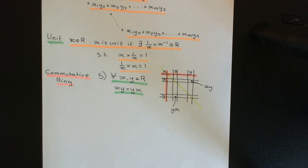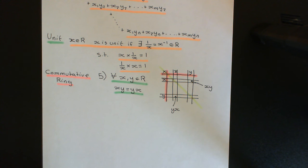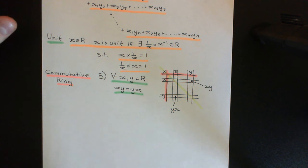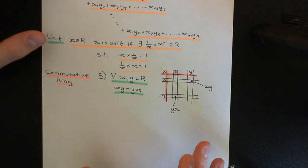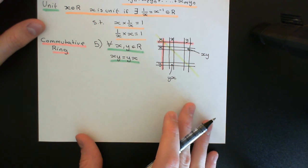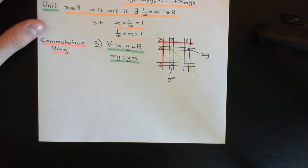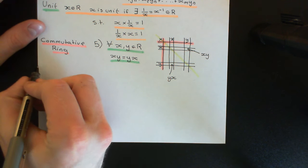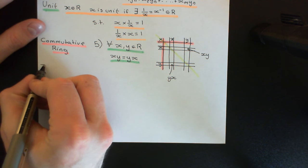Welcome back to this next video in which we are discussing the definition of a ring. In this video, what I want to do is give you some examples of rings, and all the examples I'm going to show you are actually going to be examples of commutative rings. The first and foremost example of a commutative ring — indeed the prototype for all of ring theory — is the ring of integers.